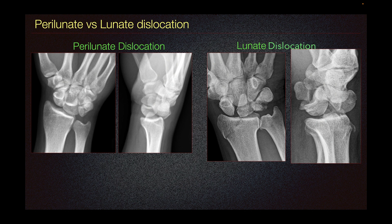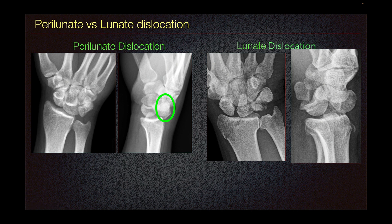One thing that we talk about is perilunate versus lunate dislocation. Both are in the same spectrum of ligamentous injury. Here on our perilunate dislocation, we can see we lost the arc and also have this piece-of-pie sign. Additionally, on our lateral radiograph, we can see that the lunate is in alignment with the radius. However, the distal carpal row, such as our capitate, is dorsally dislocated. This is consistent with perilunate dislocation.